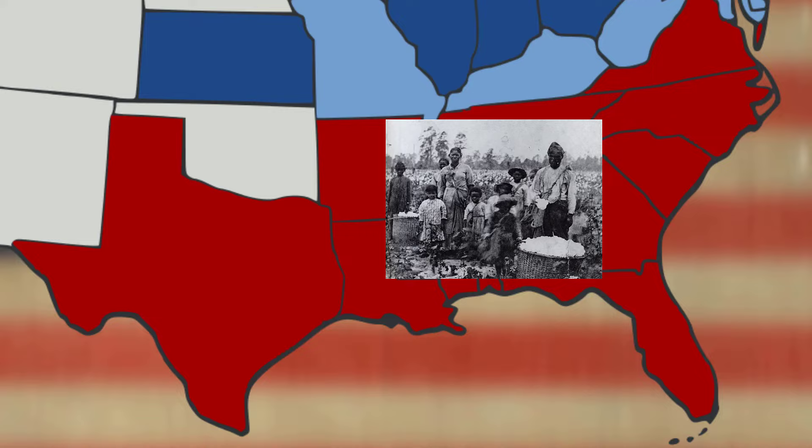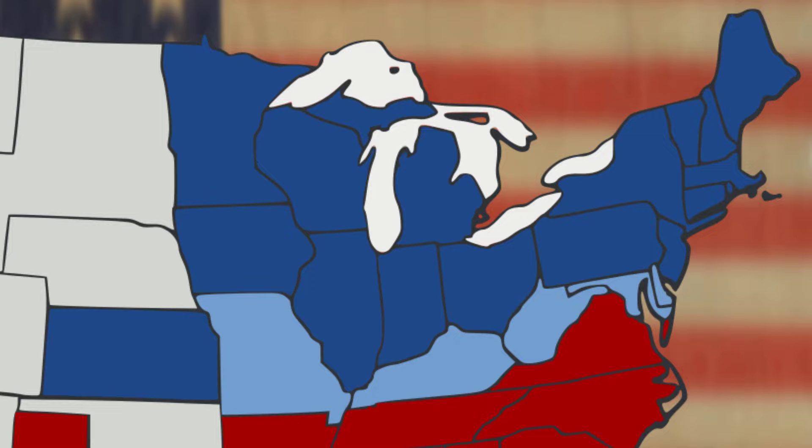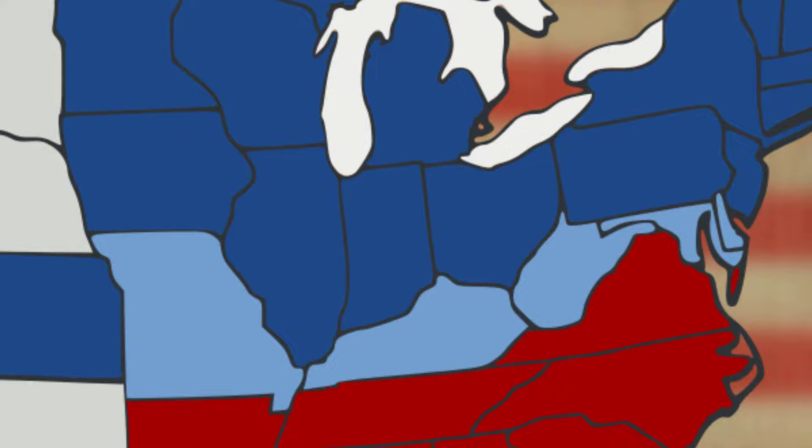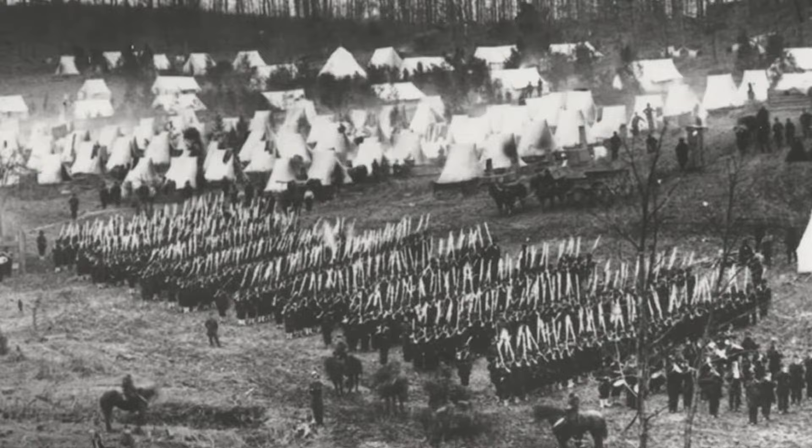The North, otherwise called the Union, consisted of 20 states with five border states: Missouri, Kentucky, West Virginia — which broke away from Virginia during the Civil War — Maryland, and Delaware. These border states still had slavery and didn't vote for Lincoln in 1860, yet they never officially seceded from the Union. That doesn't mean they exclusively supported the Union, because men from these states fought for both the Union and the Confederacy.